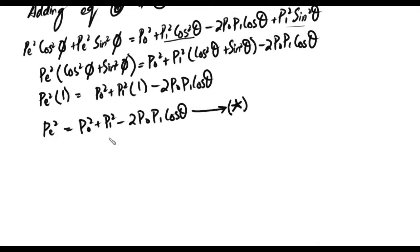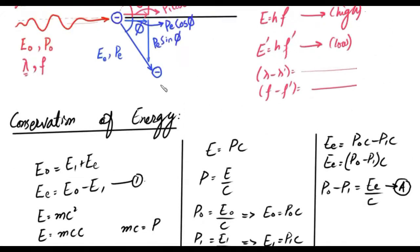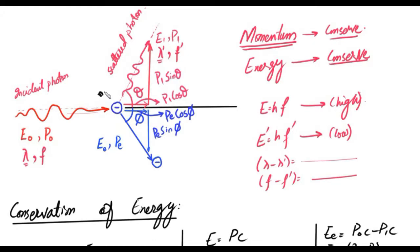Now, before proceeding, we have to remove the electron's momentum and energy — we have to eliminate it. If you remember from video 1, we need to isolate the electron's momentum. We have to make this equation. Looking at the diagram, the electron before collision was at rest.